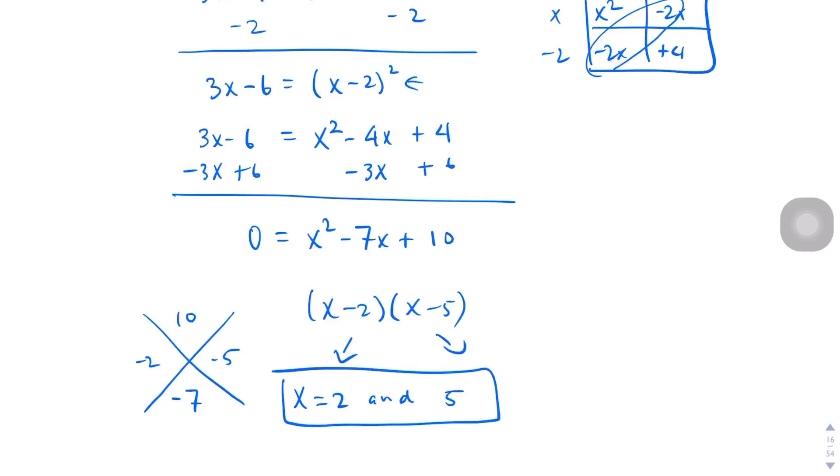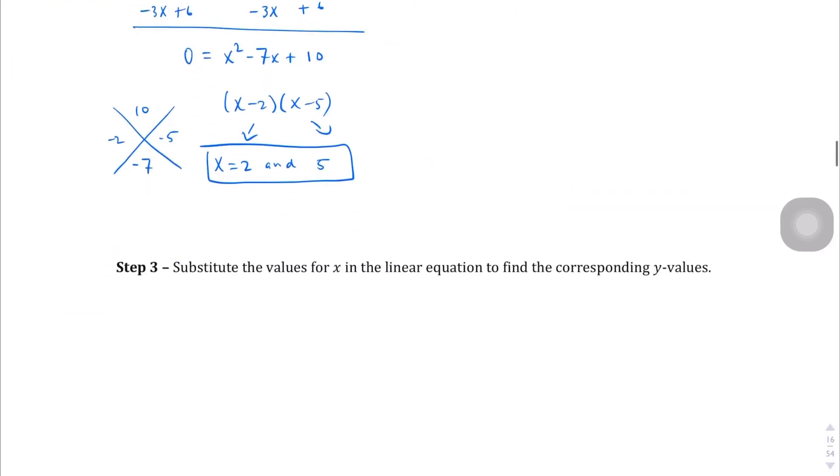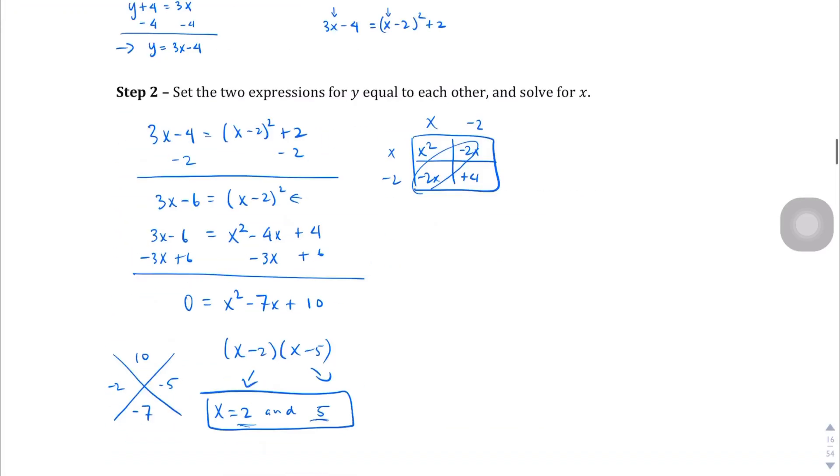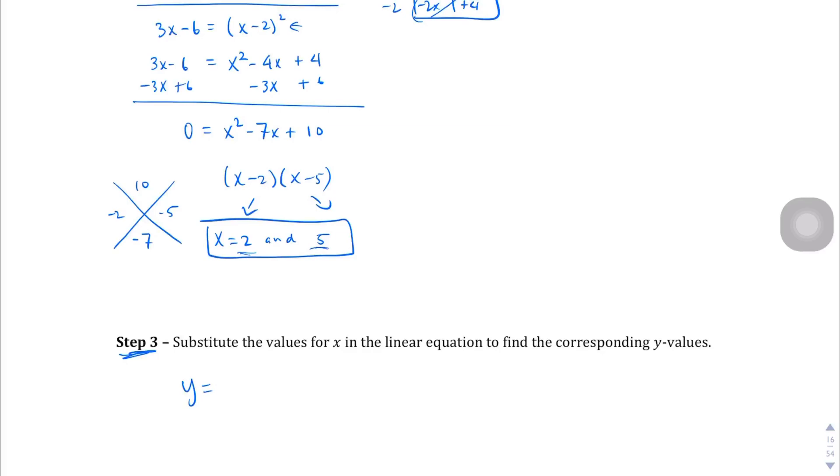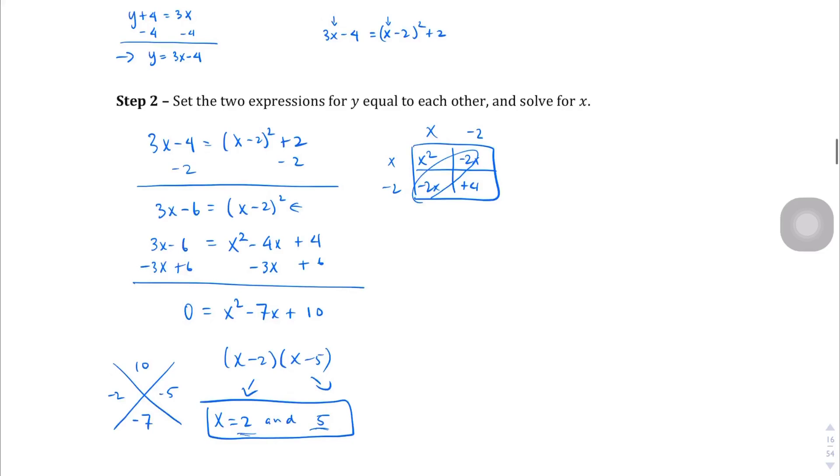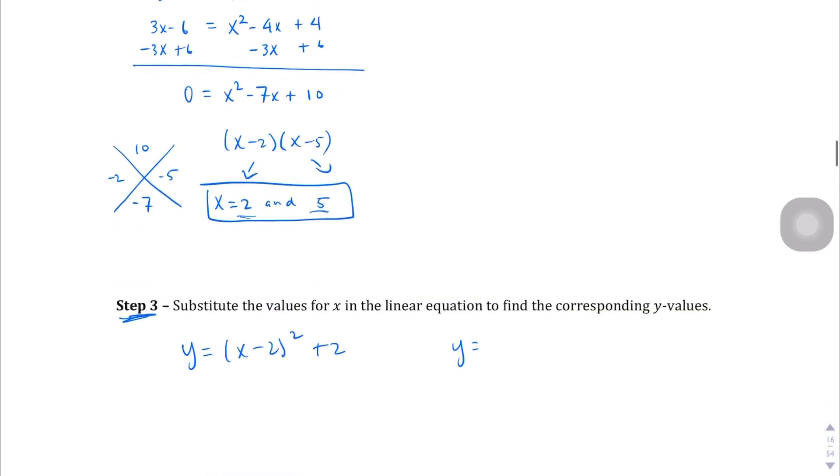Now, we're not done yet because we've solved for x. We haven't solved for y yet, right? So we have two x values. And so we're going to substitute. So step 3 says we're going to substitute those x values into the original equations to find the corresponding y values. So let's write the two equations here. We get y equals, what was it, x minus 2 squared plus 2. And the other one was y equals 3x minus 4.